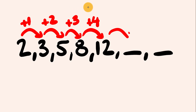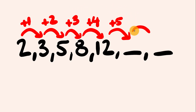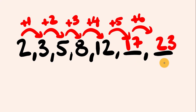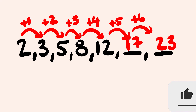So let's continue this pattern. Next we're going to go up by 5, so 12 plus 5 equals 17. And then we go up by 6, so 17 plus 6 equals 23. Keep looking at the difference between those numbers and you'll be fine — it gets you 90% of the way there.